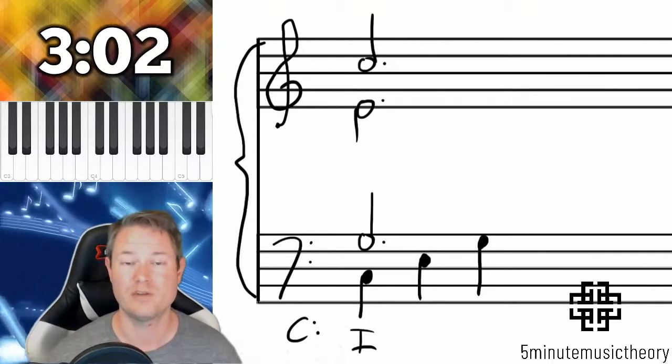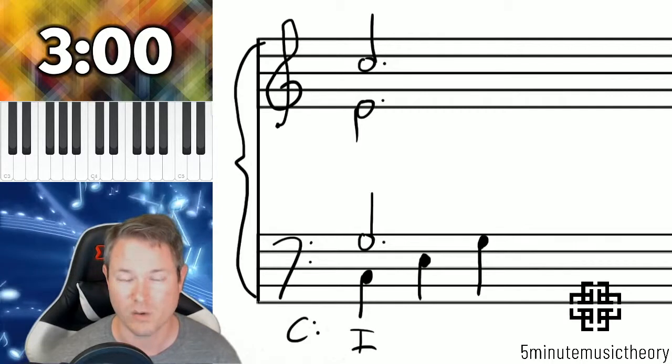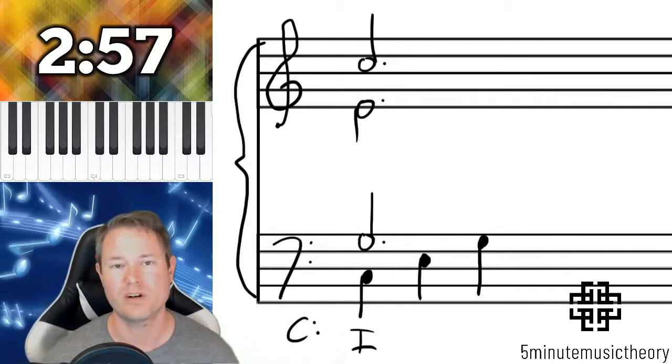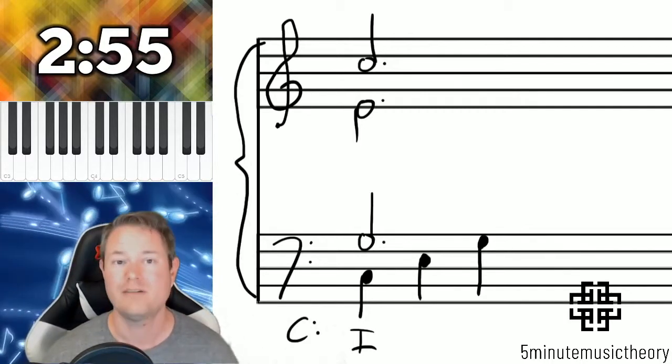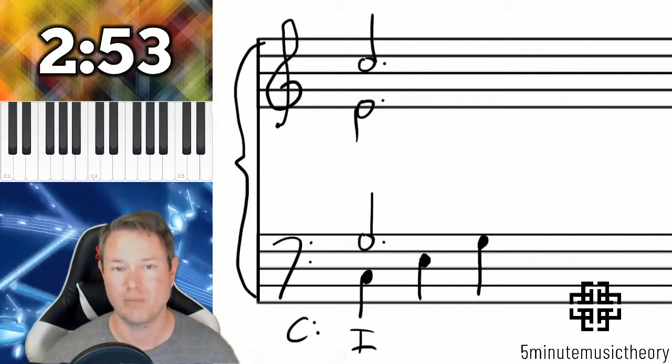Let's do a quick review, because this will be the last video on 6-4 chords. There are three viable types of 6-4s: the cadential 6-4, followed by the passing 6-4, and the pedal 6-4.